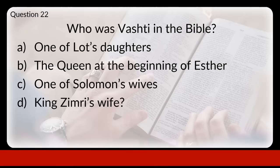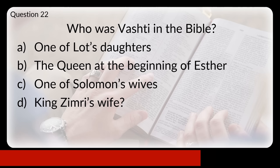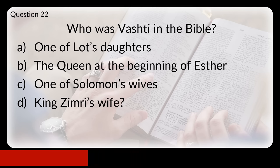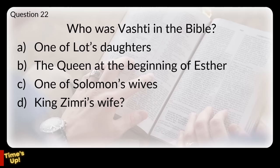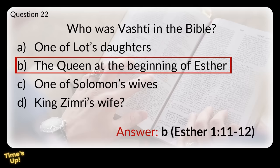Question twenty-two: who was Vashti in the Bible? Was she one of Lot's daughters, the queen at the beginning of Esther, one of Solomon's wives, or King Zimri's wife? The answer is B, she was the queen at the beginning of the book of Esther.